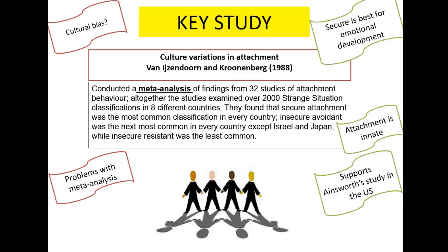Secure attachment was the most common in every country except Israel and Japan. In Japan, insecure resistant was more common. Generally, secure attachment was the most common overall. This cross-cultural finding tells us that we are born able to form attachments, so we can say that attachment is innate — and that is a key strength of this research.